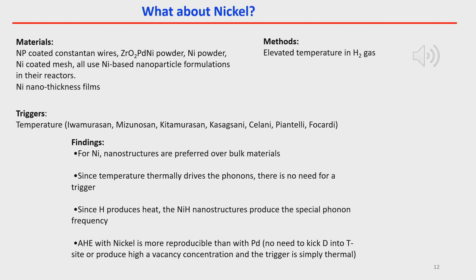For nickel, the materials are nanoparticles, nanoparticle-coated wires, nanoparticles contained in zirconia powders, nickel powders, and nickel-coated meshes — they all use nickel-based nanoparticle formulations in their reactants — as well as nickel nanothickness films. The trigger is simply temperature, according to all these authors. Nanostructures are preferred over bulk materials. Since temperature thermally drives the phonons, there's no need for a separate trigger. Since H produces heat in nickel-hydrogen nanostructures, they produce a special phonon frequency. The AHE with nickel is more reproducible than palladium — there's no need to kick D into tetrahedral sites or produce a high vacancy concentration, and the trigger is simply thermal.